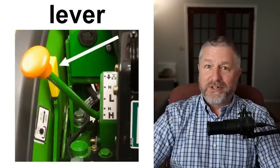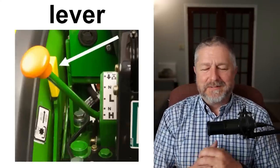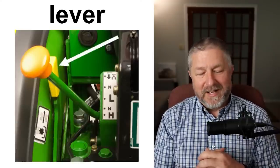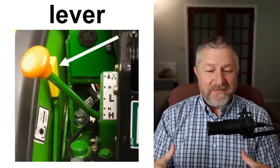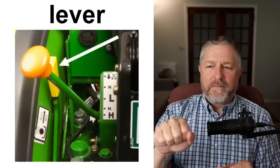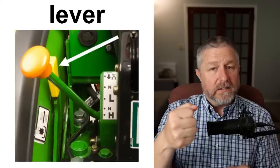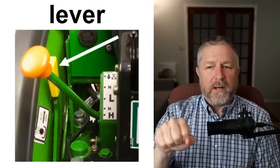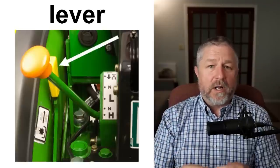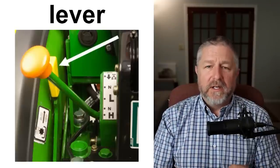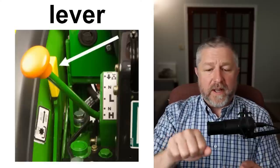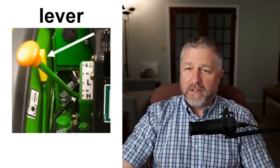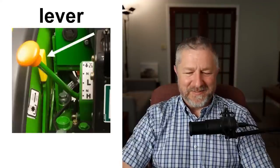This caused some controversy last time I talked about it — I call this a lever. It's anything where it's like a rod that comes up with a handle and allows you to change a setting. On my tractors in particular there are a lot of levers, and those levers do different things. If you want to call it a lever, you can — and I'm going to keep calling it a lever.